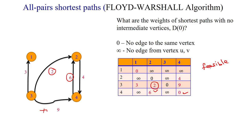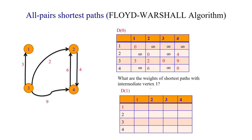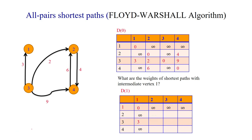The first intermediate vertex we use is vertex 1. From the existing solution, we find a new solution using vertex 1 as an intermediate vertex. When taking intermediate vertex 1, the entire row and entire column for that vertex remain the same as in the existing solution, because as the intermediate vertex, those values do not change.